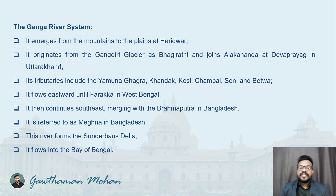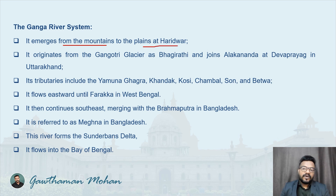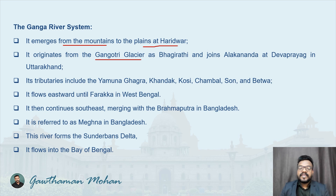The Ganges river system emerges from the Himalayan mountains and enters the plains at Haridwar. Its origin point is the Gangotri Glacier — specifically, the Gaumukh Caves in the Gangotri Glacier is where the Ganges originates.